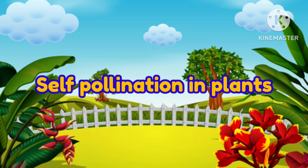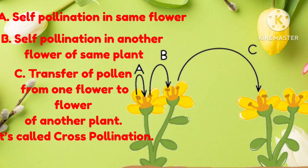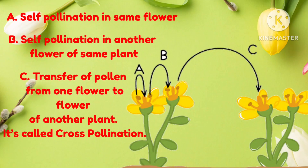Self-pollination means plants that transfer the pollen from the anther to the stigma on the same flower, or another flower of the same plant. We do not need a pollinator such as a bee in order to reproduce. Plants that self-pollinate include peanuts, sunflower, peas, etc.